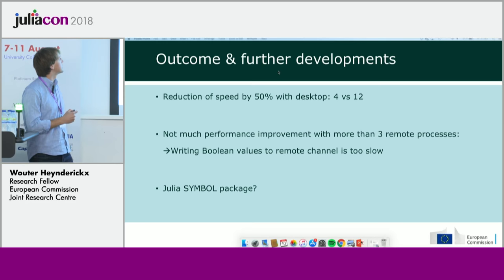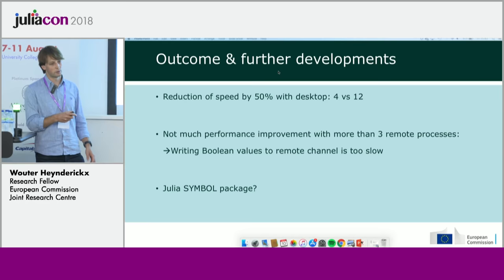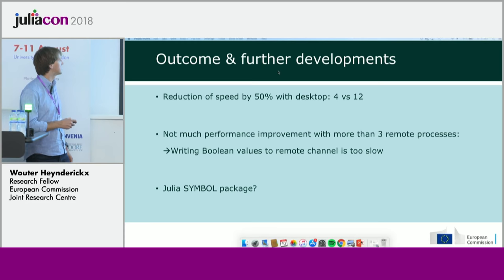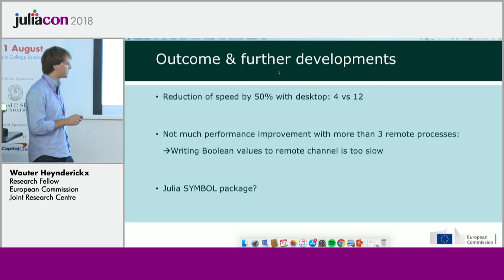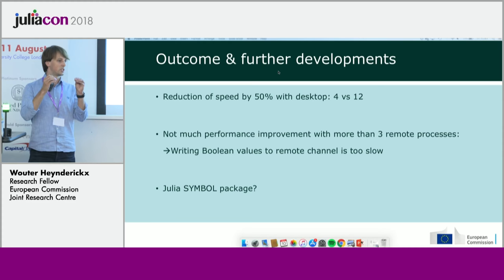The result was a 50% runtime reduction on my desktop compared to the server with 12 cores, which has some merit. However, when I tried upscaling to more parallel processes, there was not much further improvement. Interestingly, I expected writing booleans through the remote channel to be fast, but apparently it is not — the processes block each other when writing to the remote channel.